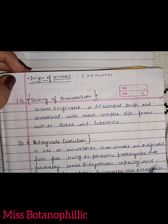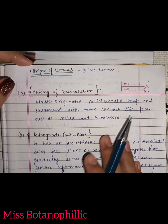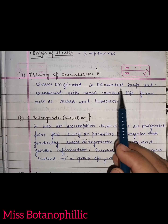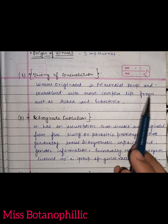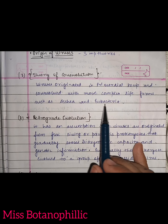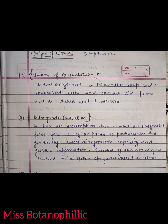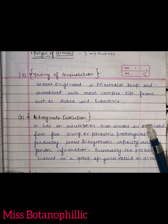First of all, we are going to study the theory of co-evolution. Viruses originated in the primordial soup and co-evolved with more complex life forms such as archaea and eubacteria. In the previous time, when our reducing environment produced a prebiotic soup, which we call the primordial soup, this theory of co-evolution explains how life evolved together.